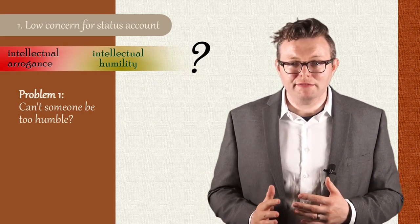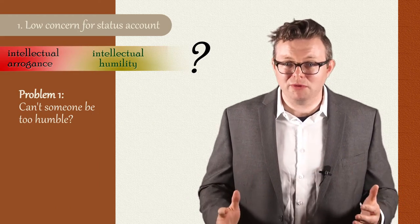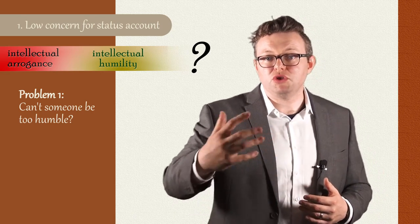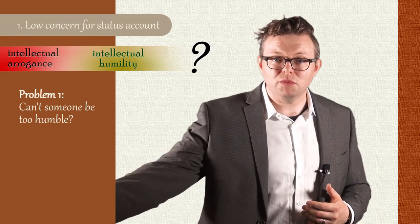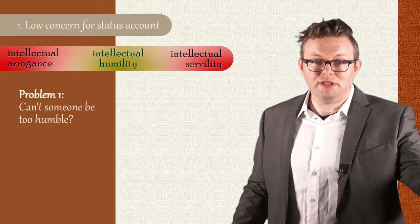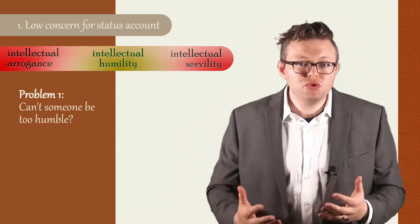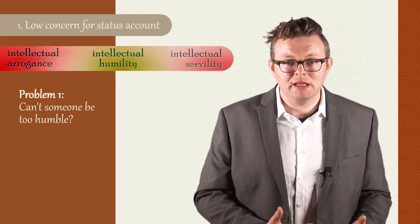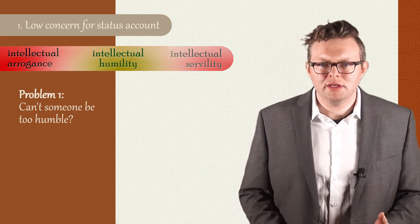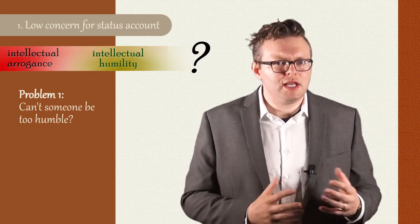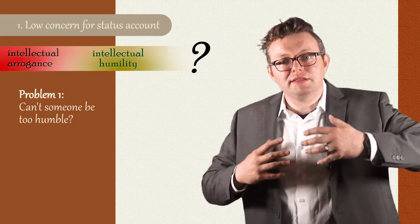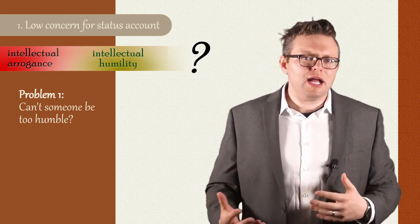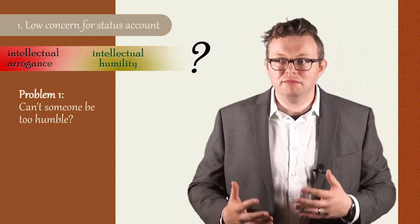The first question we might have is: can't someone be too humble? I think we generally tend to think of intellectual humility as a virtue between vices like intellectual arrogance on the one hand and intellectual servility on the other. Someone, it seems, can be too humble — they can be so self-deprecating and self-lessening that they're vicious, not virtuous. However, since the low concern for status account sees intellectual humility as merely the opposite of intellectual arrogance, it's not clear how it can capture this idea that someone can be too humble.